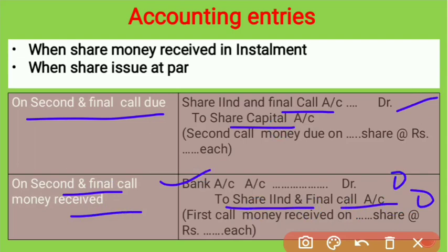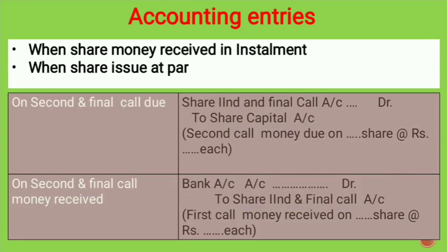In this way, for issue of shares at par in the installment case — where amounts are received partly on application, partly on allotment, partly on first call, and partly on second call — these entries are recorded in the books of accounts of the company.